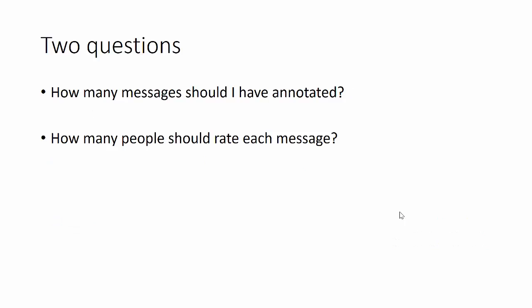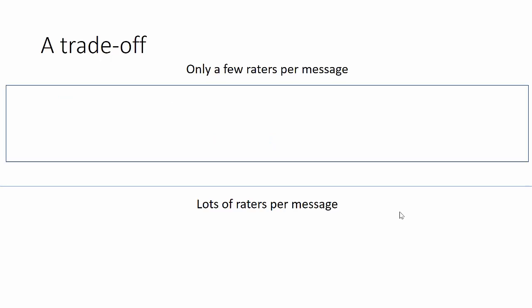In setting up your tasks, you need to answer two questions. How many messages should I have annotated? And how many people should rate each message? The general rule of thumb is that more is always better, but that can get expensive. Often you have to make a choice.